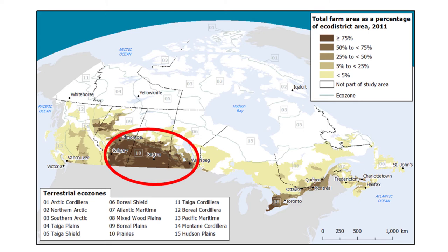Very little fruit and vegetable production occurs in the prairies relative to the size of its total land base and relative to fruit and vegetable production in other areas of Canada. These factors — it's much drier, winters are colder, and the growing season is much shorter — are going to constrain the type of cropping systems that exist on the prairies.